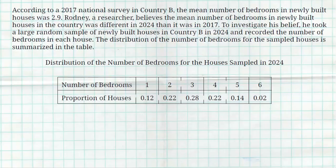So 12% of the houses had one bedroom, 22% had four bedrooms — you get the idea. I'm not going to read the whole table.